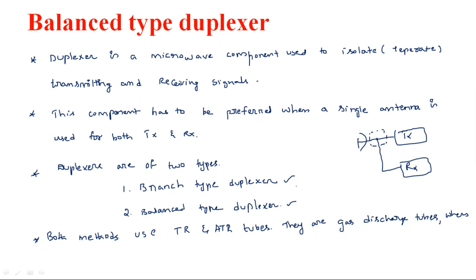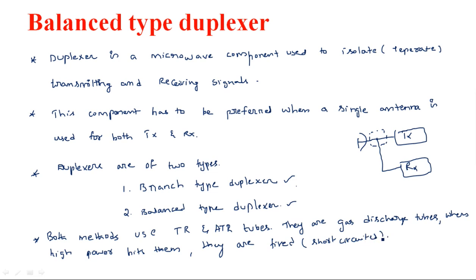When high power hits these gas discharge tubes, they are fired — that is, they become short-circuited. TR means Transmit-Receive, ATR means Anti-Transmit-Receive. When high power touches them, they simply act as a short circuit. This is the key purpose of TR and ATR tubes when used in a duplexer.